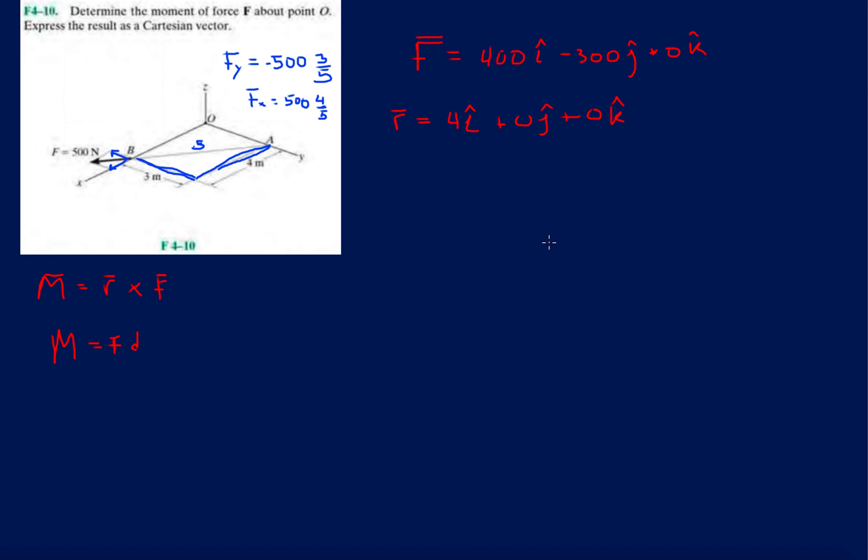Now let's just compute the moment. So the moment here is: write down our R vector, so 4i, and then we're going to cross it with F, so 400i minus 300j.